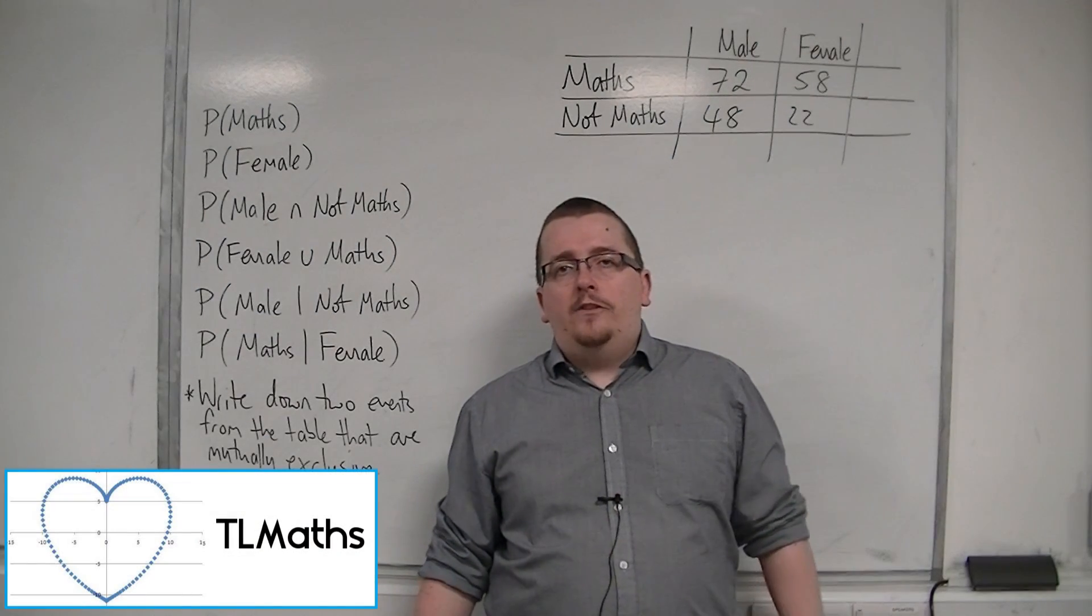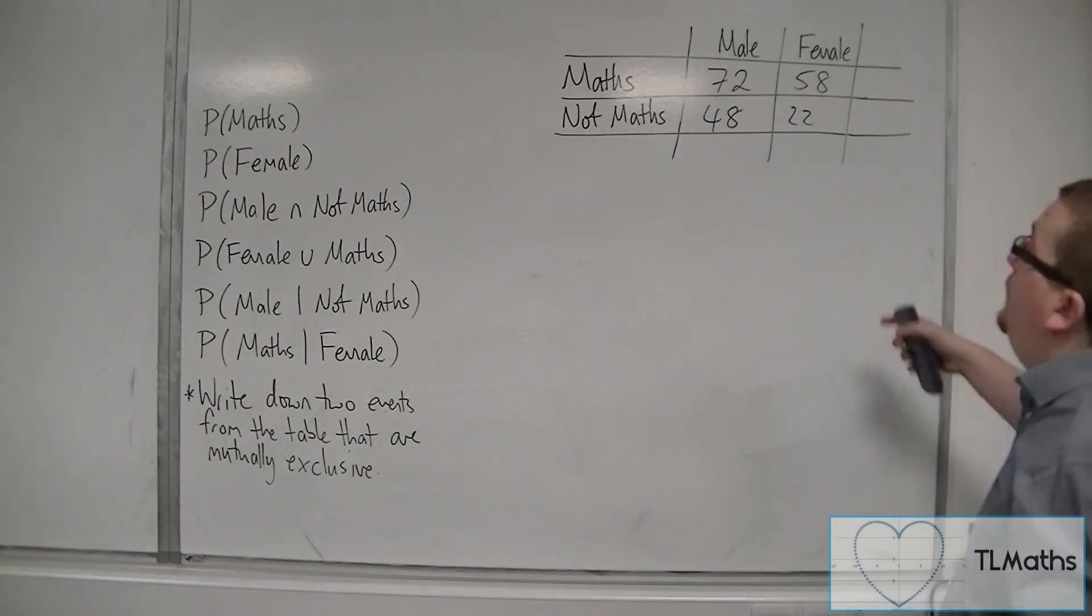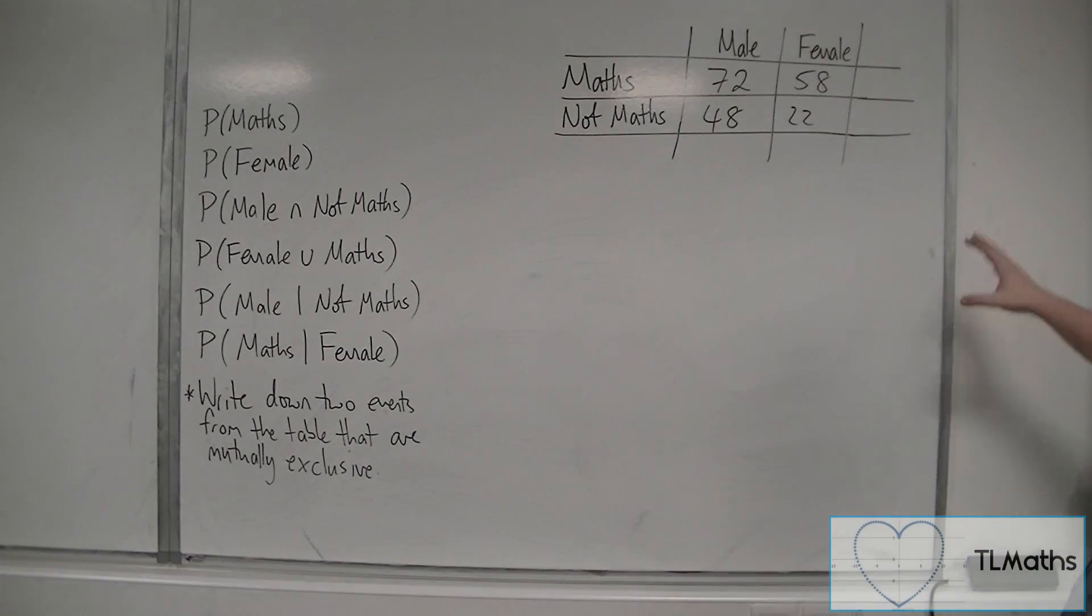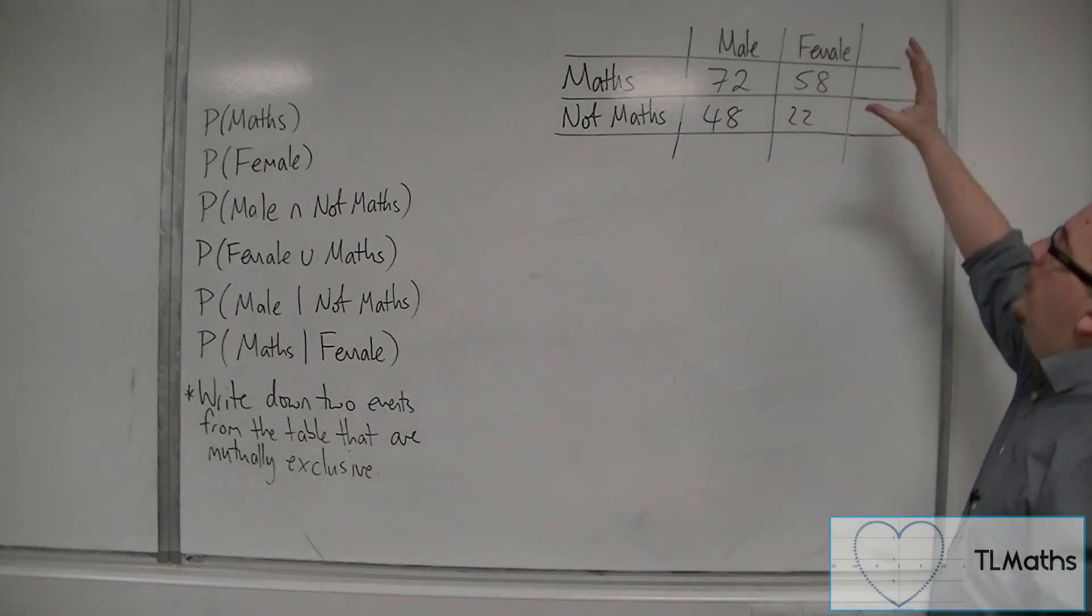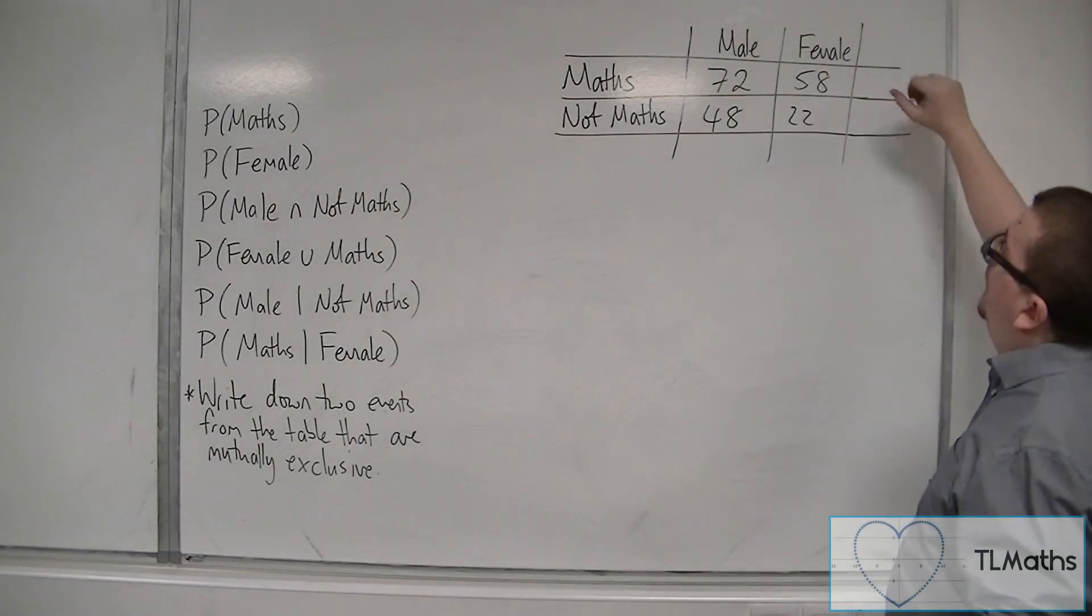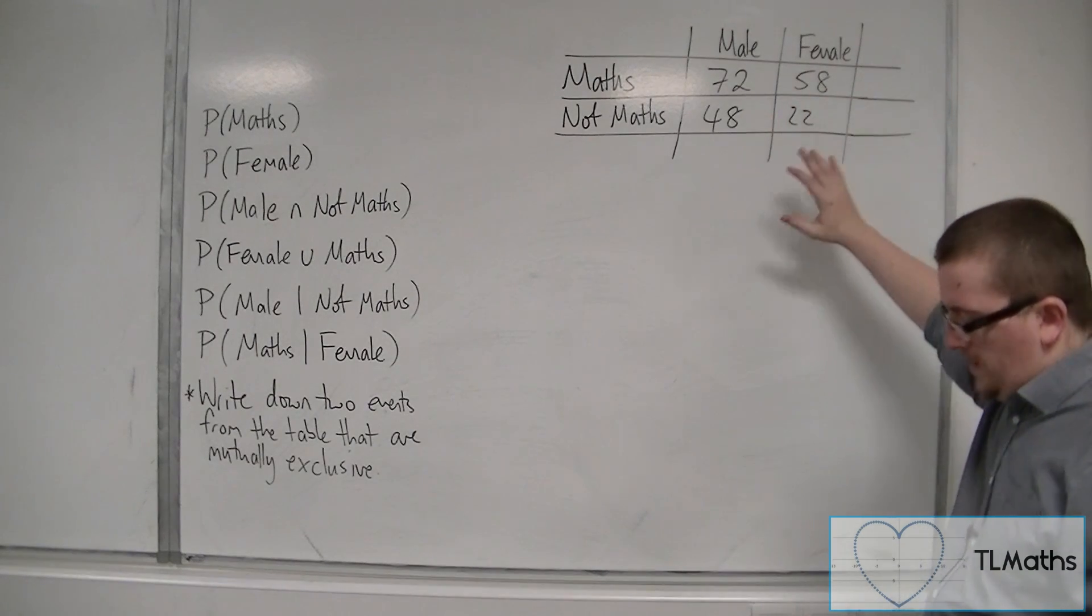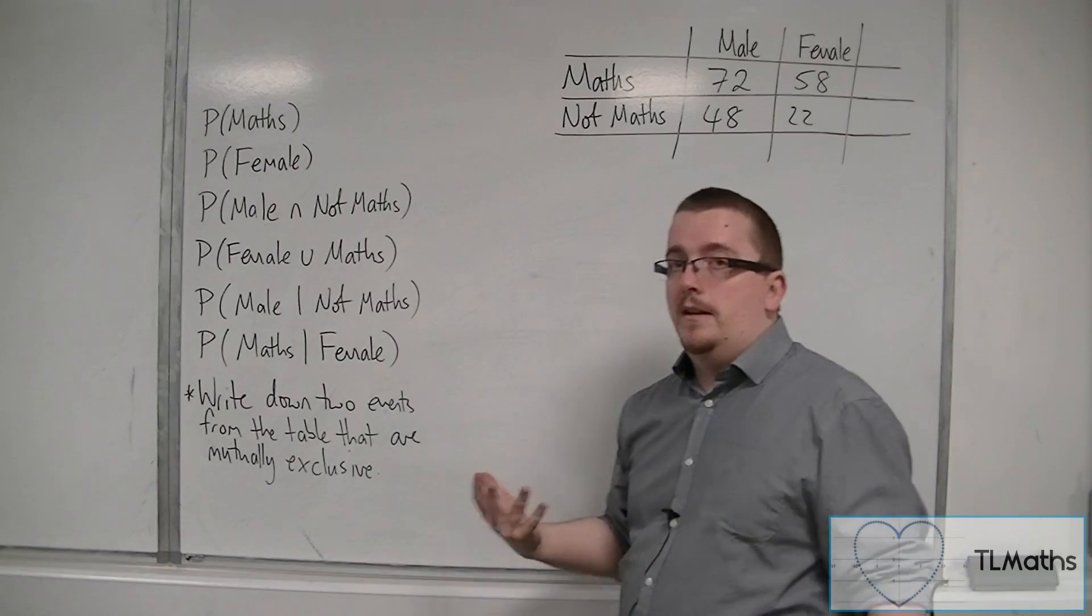In this video we're going to be looking at two-way tables. So here is an example of a two-way table. We just have a selection of people that have either taken maths or have not taken maths. And we have separated them into whether the students are male or female.